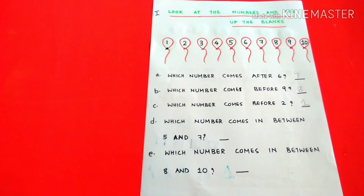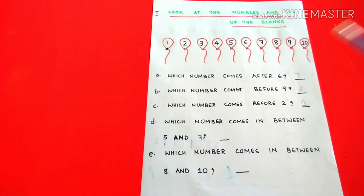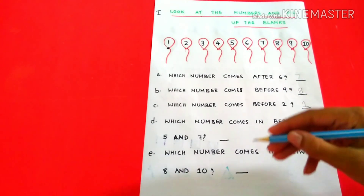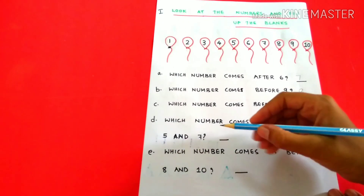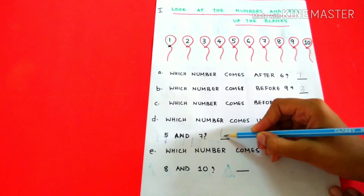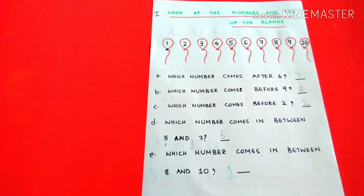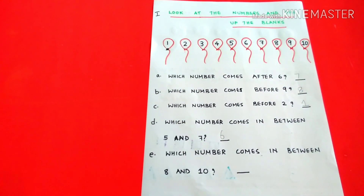Which number comes in between 5 and 7? 6.